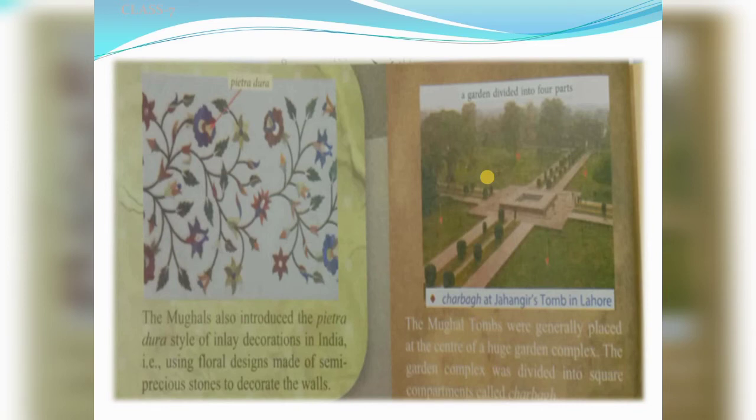The Mughals also introduced the pietra dura style of inlay decoration in India — that is, floral designs made of semi-precious stones to decorate the walls. Matlab basically marbles aur aise kuch pathhar use karke colorful floral patterns develop kiye jaate thay — jaise aap dekh sakte hain usne dee rakha hai.